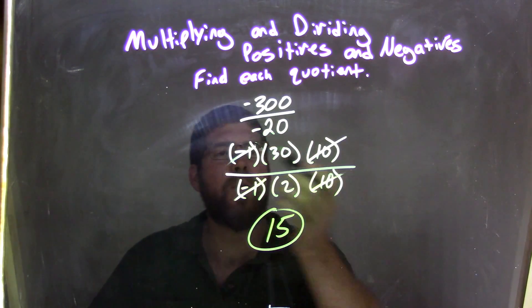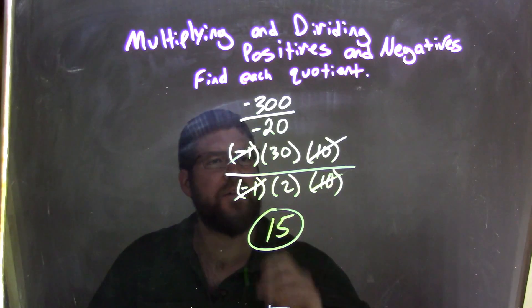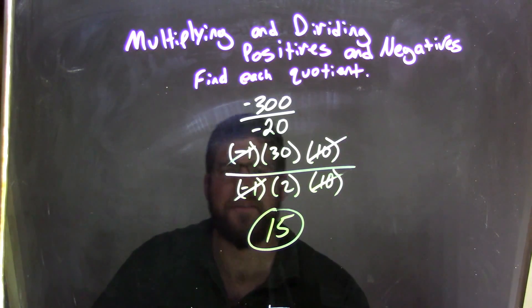So what we did, we broke down the numerator and the denominator, not complete prime factorization, but broke it down somewhat, and where we can start canceling some numbers out.